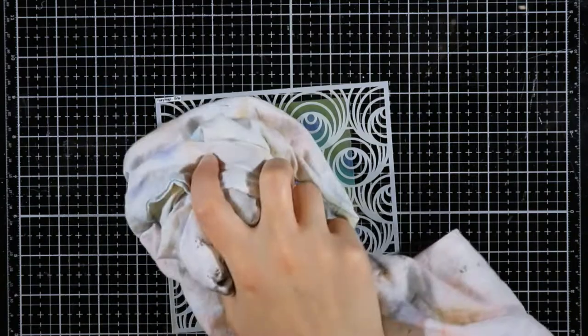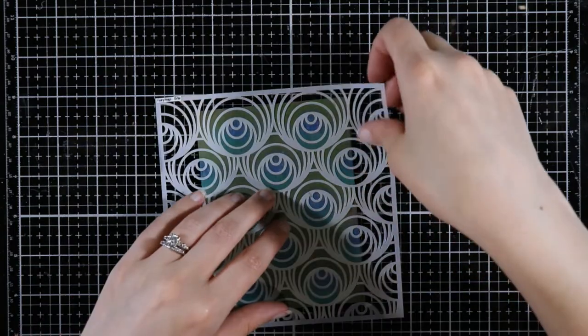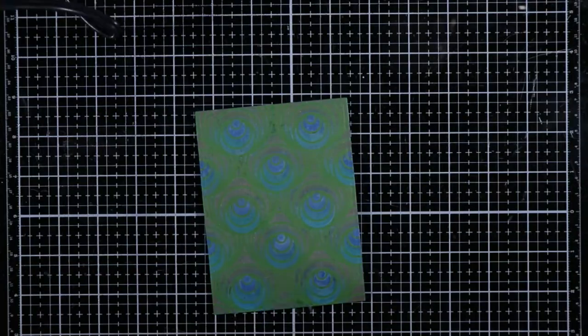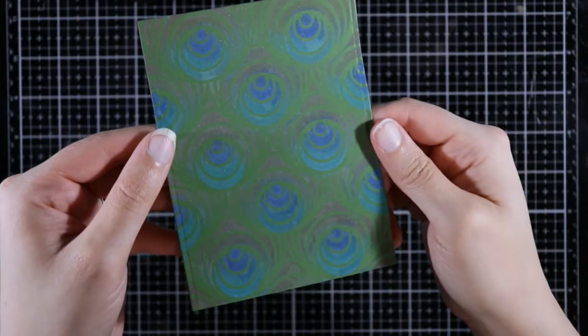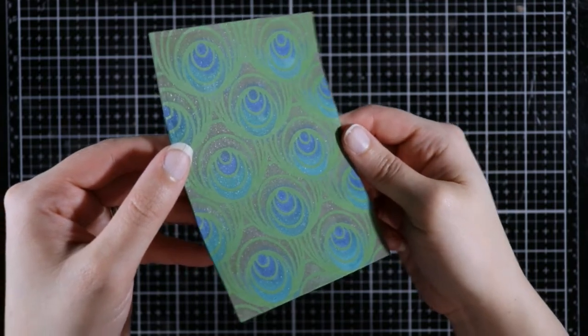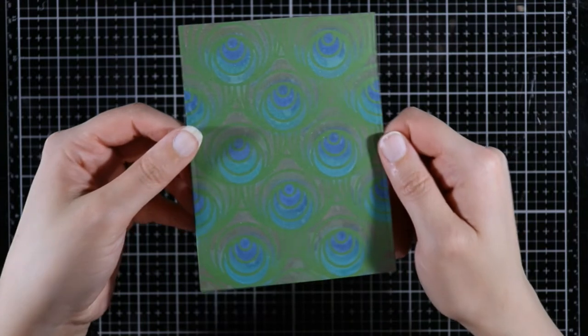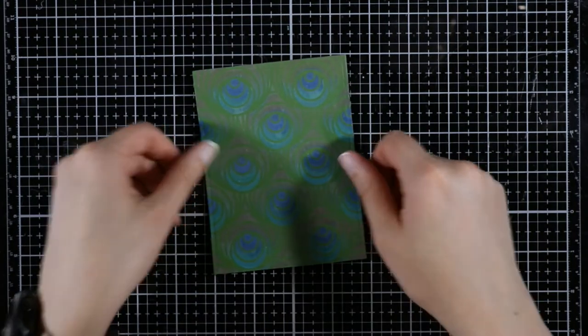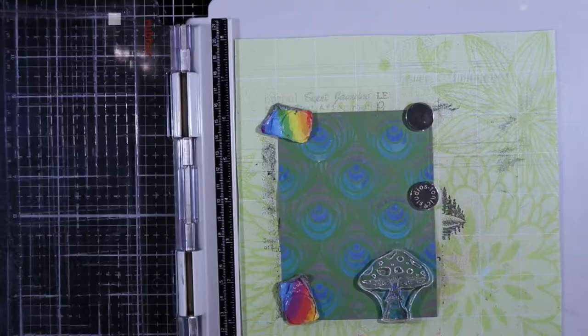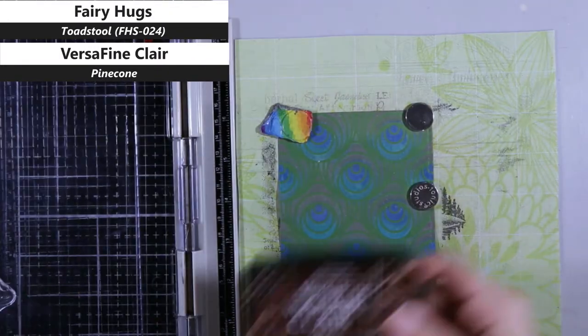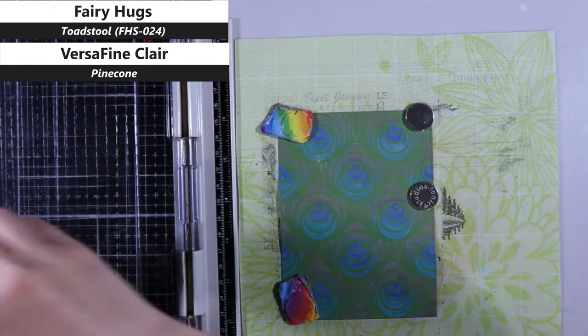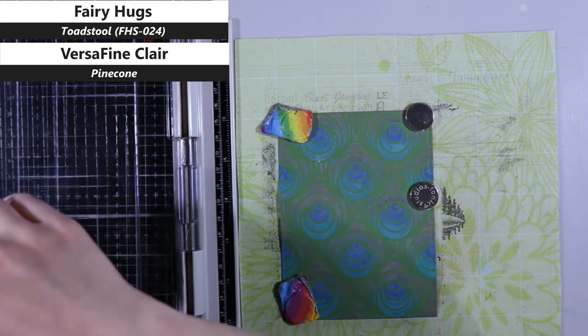Then I'm taking just some regular water, spraying that on there, because oxides do react with water. I did some big droplets and some little droplets. I just did some half sprays on my water bottle so I got some big droplets, and I did just some regular sprays to get some mist. Then I took my heat tool and I set that because when I took the stencil off it wasn't very impressive, but once it dried it did look really cool. I'm not a patient person, so I heat set that instead of letting it dry naturally.